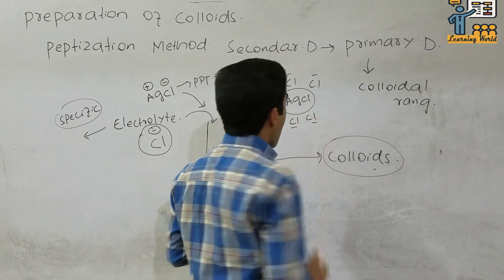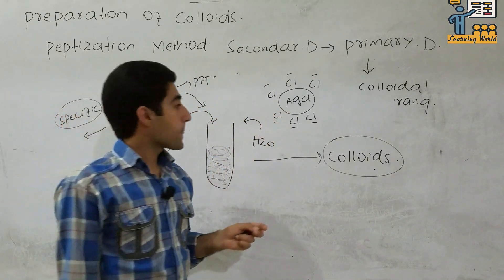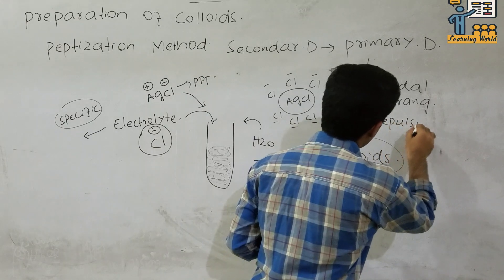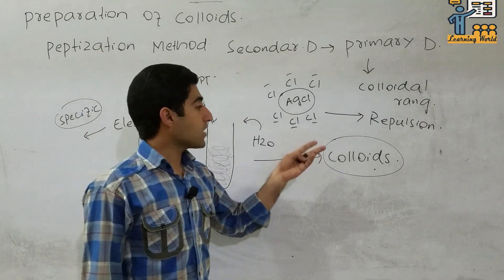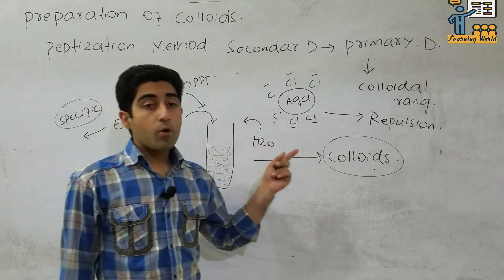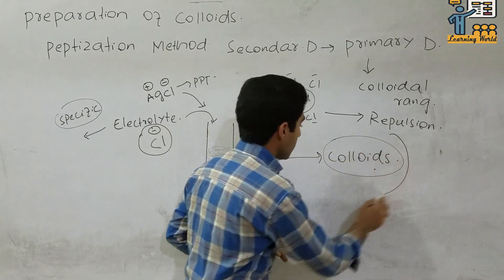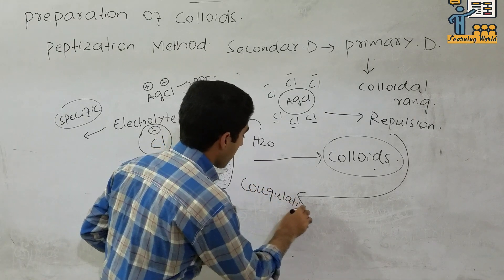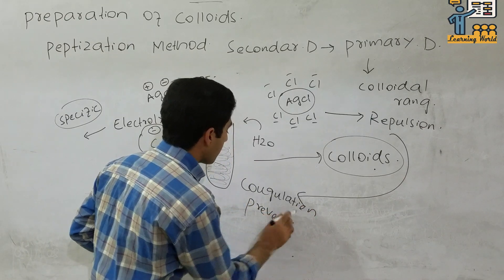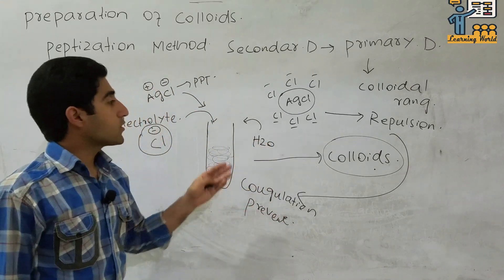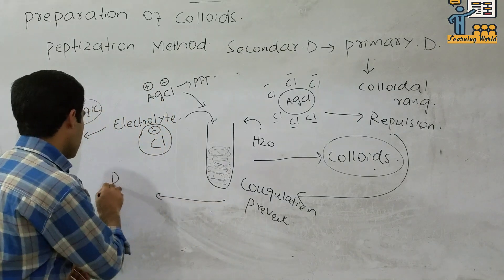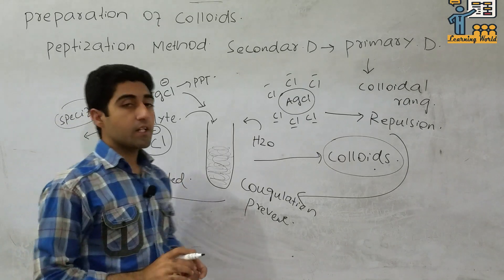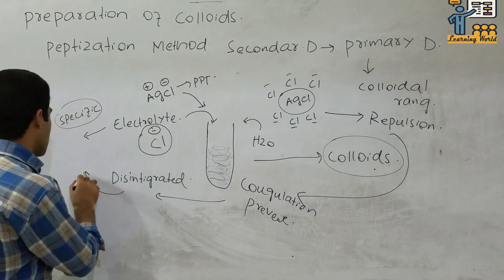The negatively charged electrolyte forms a layer around the silver chloride particles, and forces of repulsion occur between the chloride molecules. This repulsion prevents the coagulation of the precipitate, causing the AgCl particles to disintegrate. The particle size is reduced to the colloidal range.